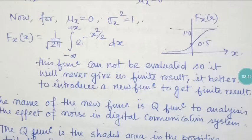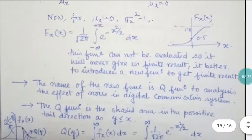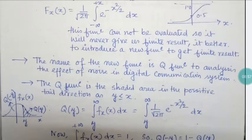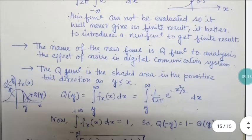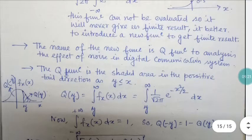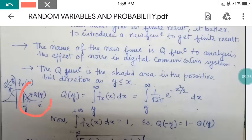Since this function cannot be directly evaluated to give a finite result, it is better to introduce a new function to get that finite result. The new function is called the Q-function. The Q-function is used to analyze the effect of noise in digital communication systems. It represents the shaded area in the positive tail direction for y ≤ x, defined as: Q(y) = integral from y to infinity of (1/√(2π)) × e^(-x²/2) dx.